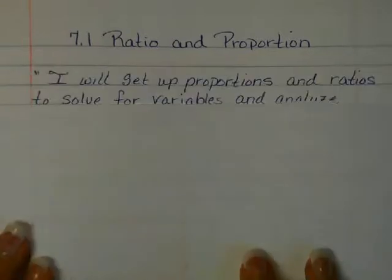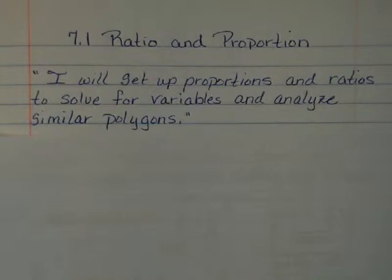The first thing we always do in class is we need to write our I will statement so this will save you some time when you get here. This one for chapters 7.1 and 2 says I will set up proportions and ratios to solve for variables and analyze similar polygons. So, you can go ahead and pause and get that written down and then join me again in a second.